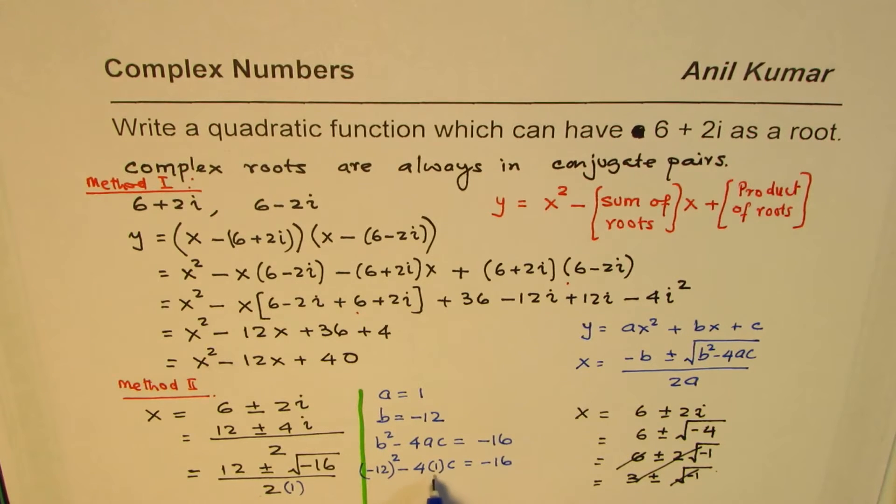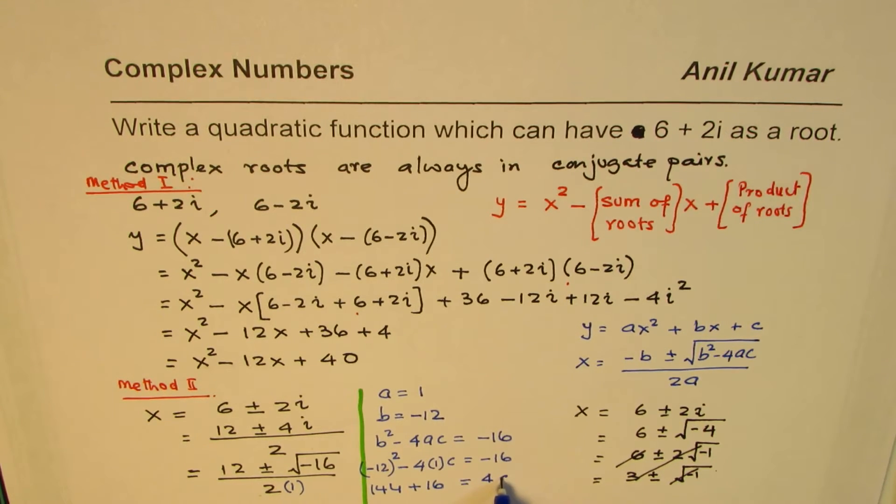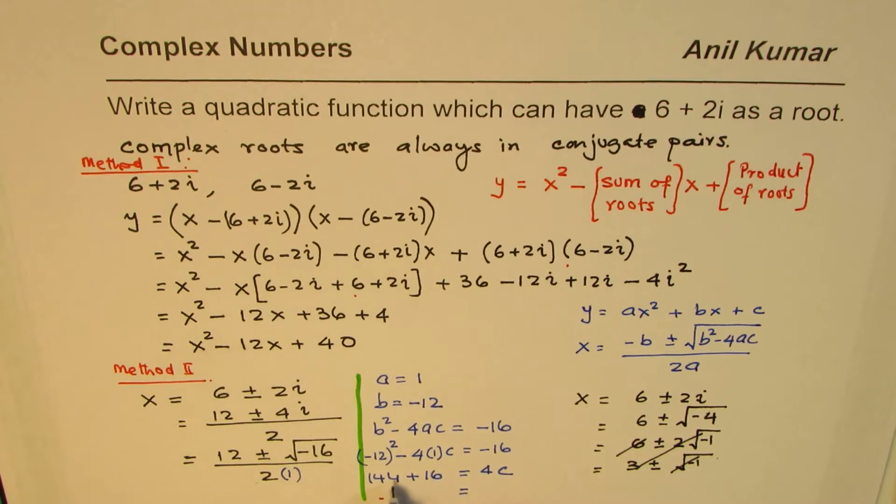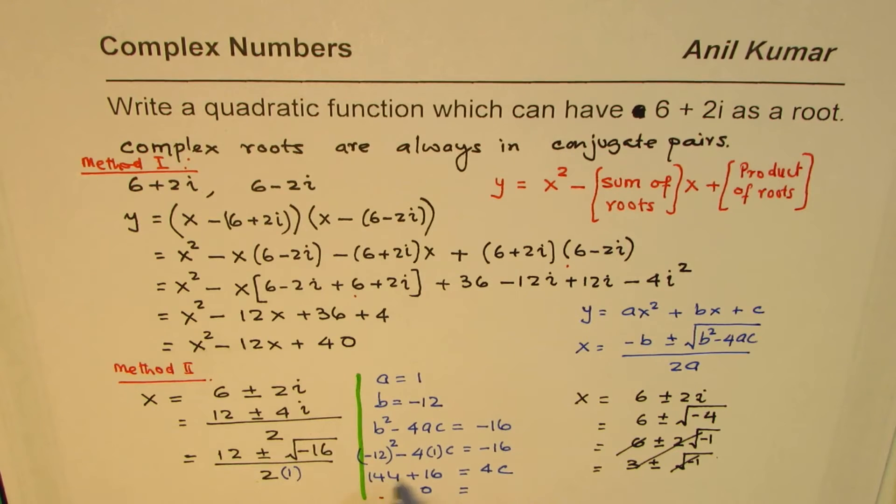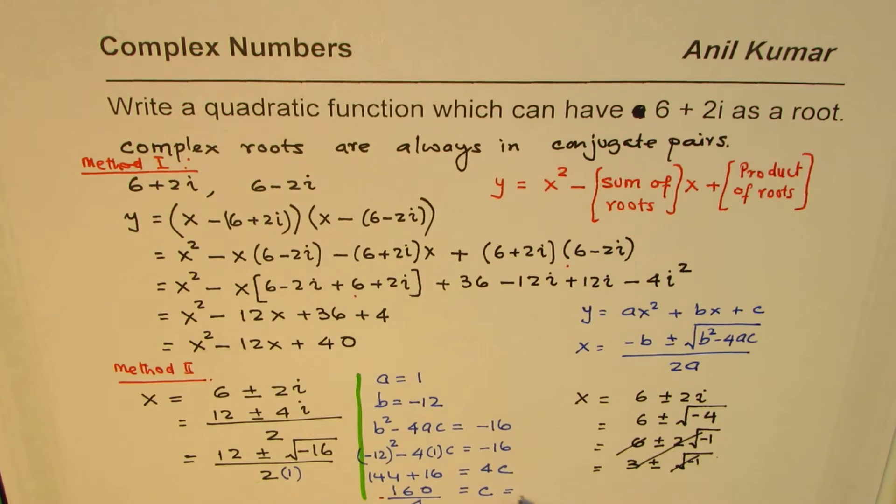So, here, we get minus 12 whole square minus 4 times 1 times c equals to minus 16. Now, solving, we can get 4c. We are taking this to the right side. Minus 12 whole square is 144. Taking 16 to this side is plus 16 equals to 4 times c, right? Now, you can find the value of c by dividing this combination by 4. 144 plus 16 is 160. Divided by 4 is the value of c. And that gives you the value of 40.